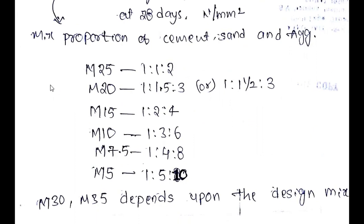Now pay attention here guys. As grade of concrete decreases from M25 to M5, the proportion of cement remains the same which is one in all the grades. And as the grade of concrete decreases, the proportion of sand is increased by one.